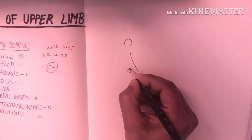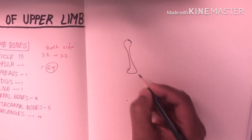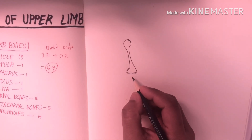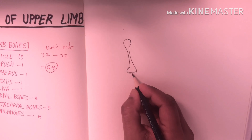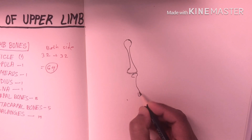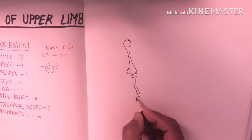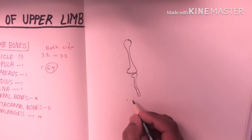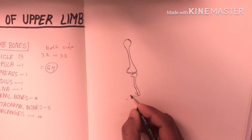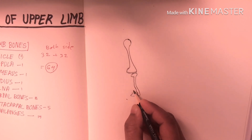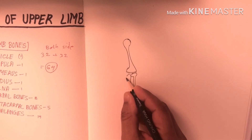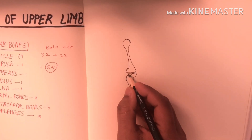This is humerus. Then ulna — the upper part of ulna is wider than the lower. Then radius, but in radius the lower border is wider than the upper.